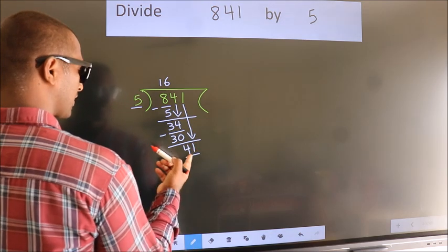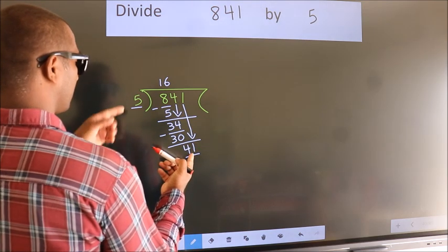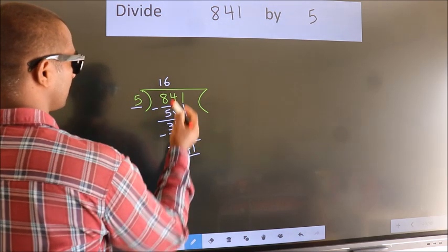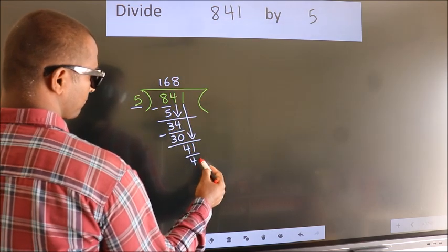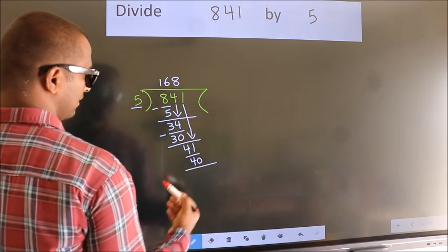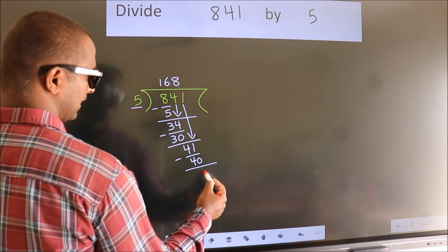So 41. A number close to 41 in the 5 table is 5 times 8 equals 40. Now we subtract. We get 1.